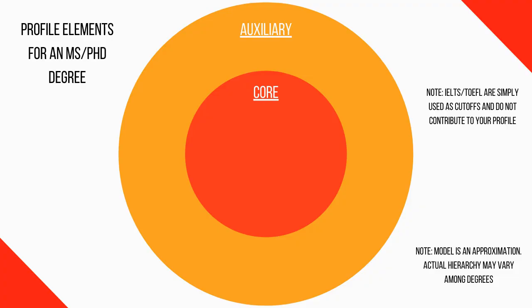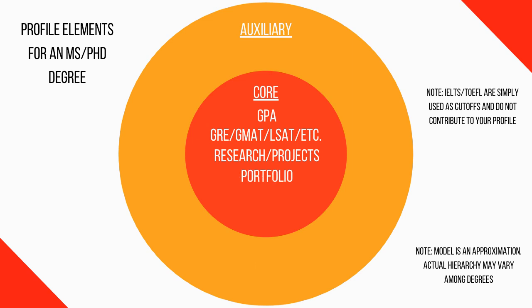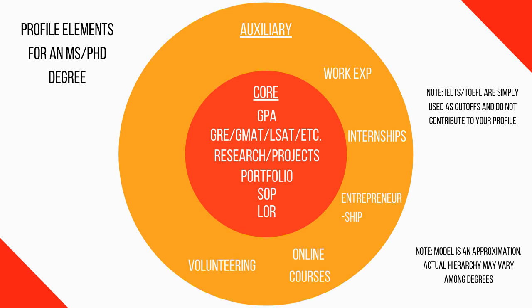When it comes to your profile, I like to split it into two main categories: the core category and the auxiliary category. In the core category, we have your GPA, your GRE or GMAT or LSAT or any of these main important tests, your research or projects, your portfolio — especially for arts, design, and architecture students — your statement of purpose, and your letter of recommendation. In the auxiliary category, we have work experience, internships, entrepreneurship, online courses, volunteering, extracurriculars, awards, and so on. In this video, I want to analyze all the core elements of your profile. Your auxiliary elements are nice to have, but they're not the most valuable elements within your profile.